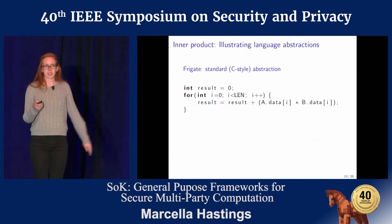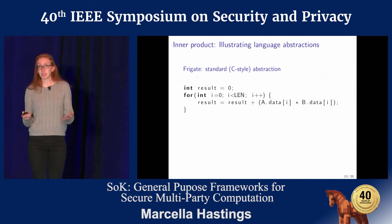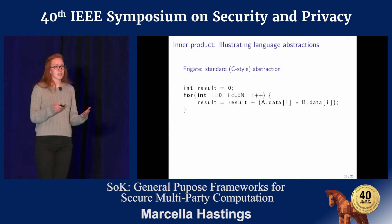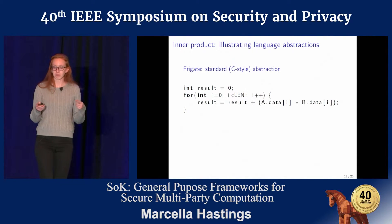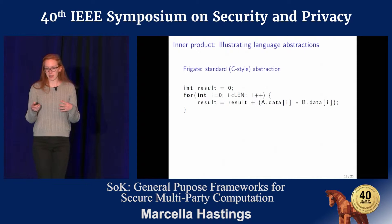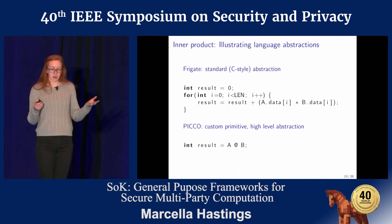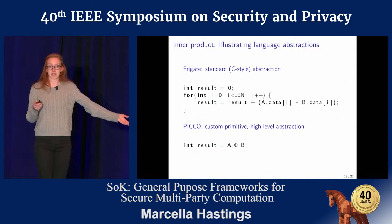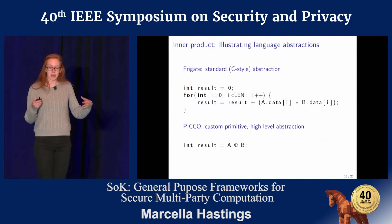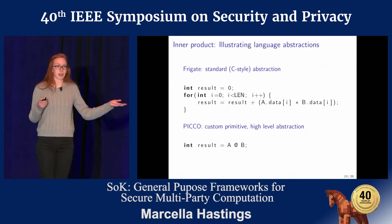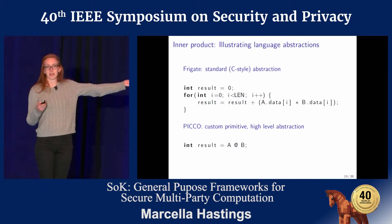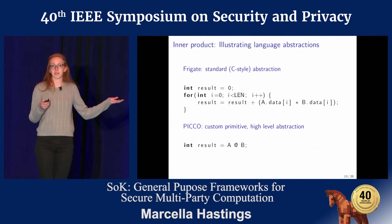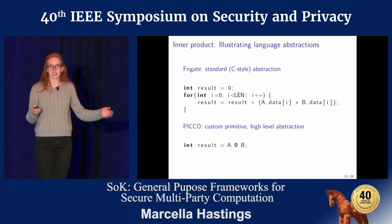Now this is pretty straightforward, but if you're familiar with MPC, you might recognize that in a linear secret sharing-based model you can parallelize all the multiplications into a single round of communication. So if you want that optimization, you might use something like PICO. PICO recognizes that you can do this optimized multiplication step, and so they implement a custom primitive — this is one of our hybrid languages — for the inner product operation. You just use this very simple custom infix operator to execute an inner product on any size vectors.